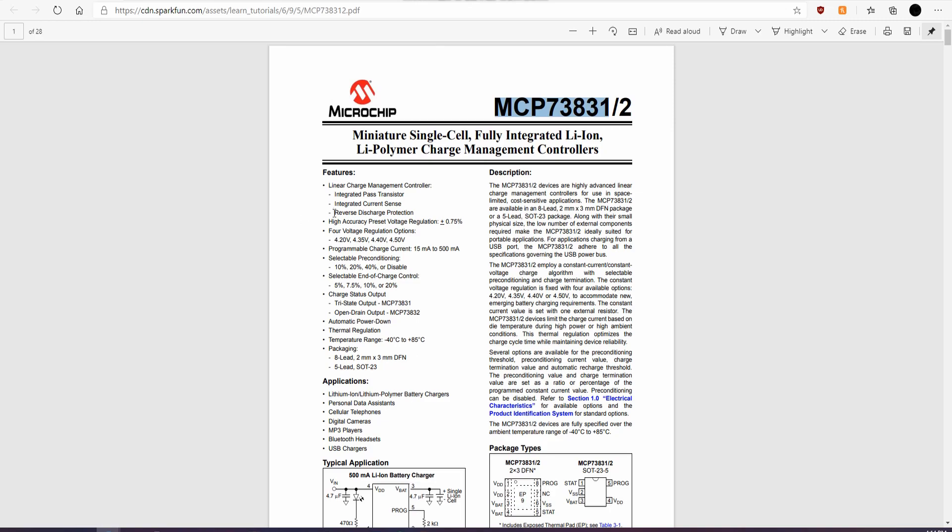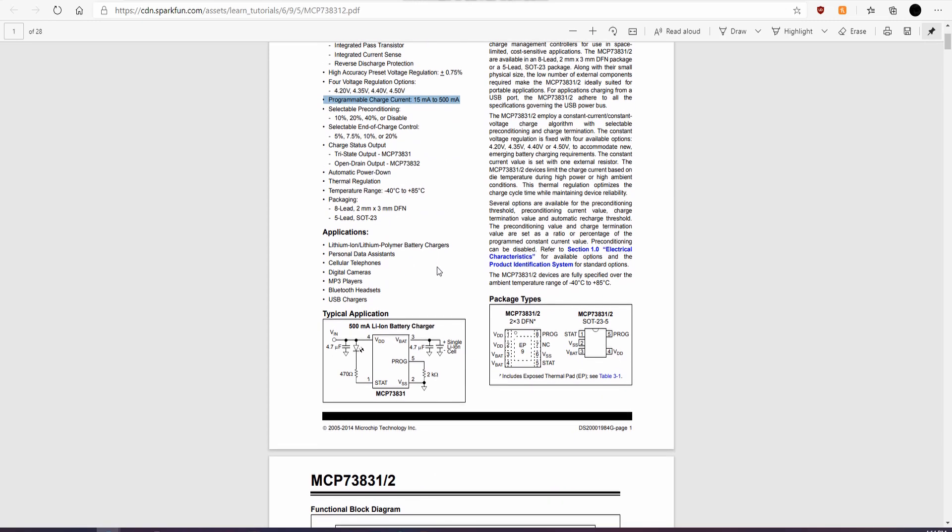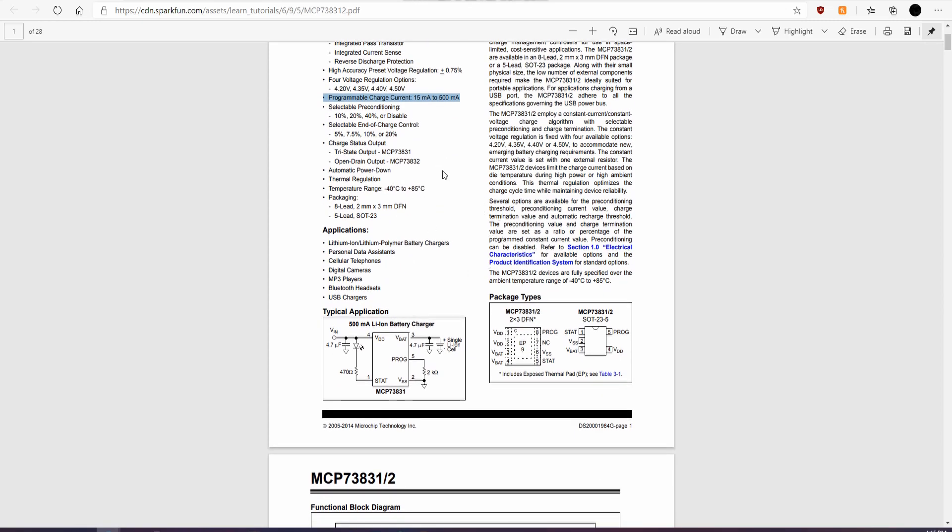Now, if you plan on copying this or altering the circuit for your own use, I encourage you to read through the datasheet, but for now, I'll just glimpse over it. We can see that it's a linear charge controller, which means it'll generate a little bit of heat, but should be manageable. We have quite a few options for current charge. I'm going to use the 500 milliamp option for higher capacity 18650 cells, and that's it for the datasheet portion.